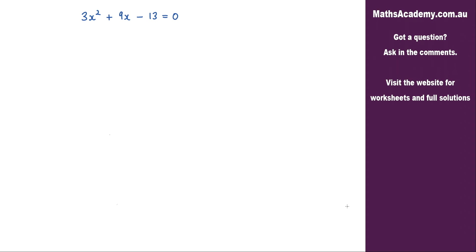Welcome to today's lesson and we have a quadratic here that we need to solve by using the completing the square method. Now the first step in this method is to eliminate the constant from the left hand side. So I've got this negative 13 here. What I'm going to do is to add 13. And if I add 13 to the left I must add 13 to the right to keep the equation balanced.